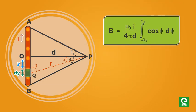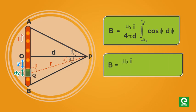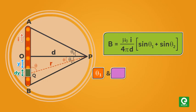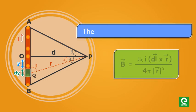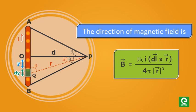The magnetic field is given by mu naught I upon four pi d into sine theta 1 plus sine theta 2. Note theta 1 and theta 2 must be taken with proper sign. The direction of magnetic field is determined by the cross product of vector I dl into R.